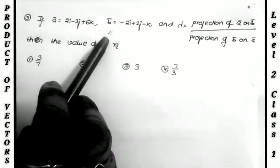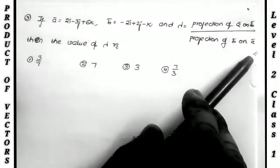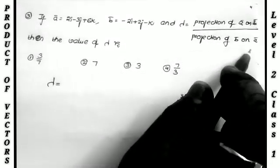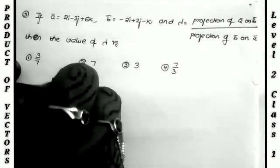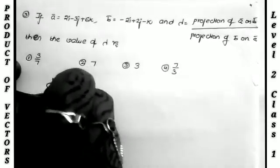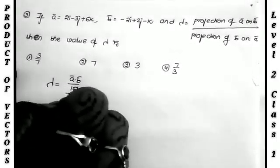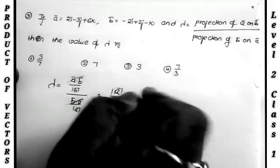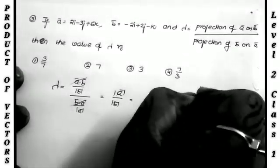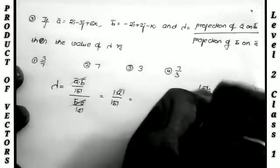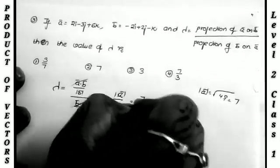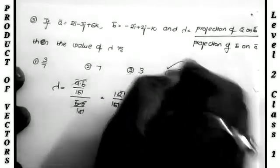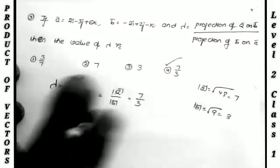Next: λ = projection of ā on b̄ / projection of b̄ on ā. Using formulas: projection of ā on b̄ = a·b/|b|, and projection of b̄ on ā = b·a/|a|. These share the same a·b, so λ = |ā|/|b̄|. |ā| = √(36 + 4 + 49) ... wait — here |ā| = √49 = 7, and |b̄| = √(4 + 4 + 4) = √12... actually √9 = 3. Therefore λ = 7/3, the last option.